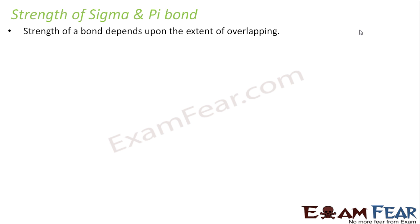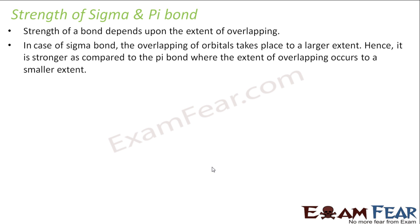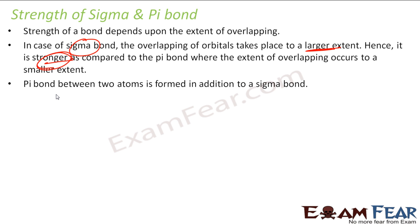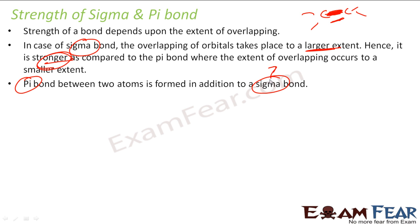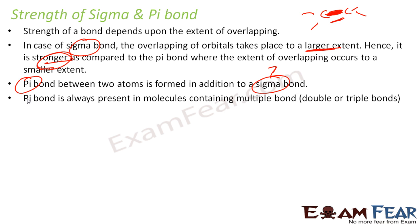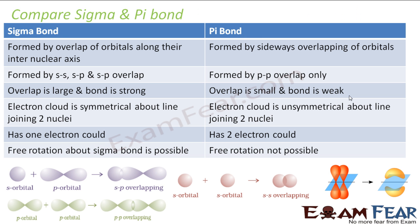Let's discuss the strength of sigma and pi bonds. The strength of the bond depends on the overlapping extent. In the case of sigma bond, the overlapping is of a larger extent, so sigma bond is stronger than pi bond. Pi bond is always formed in addition to sigma bond — the first bond formed is always a sigma bond, and then we get pi bonds. If there is a pi bond, a sigma bond must also be present. Pi bond is always present in molecules that have a double or triple bond. For single bonds, it is always sigma bond; for double and triple bonds, we have pi bonds.